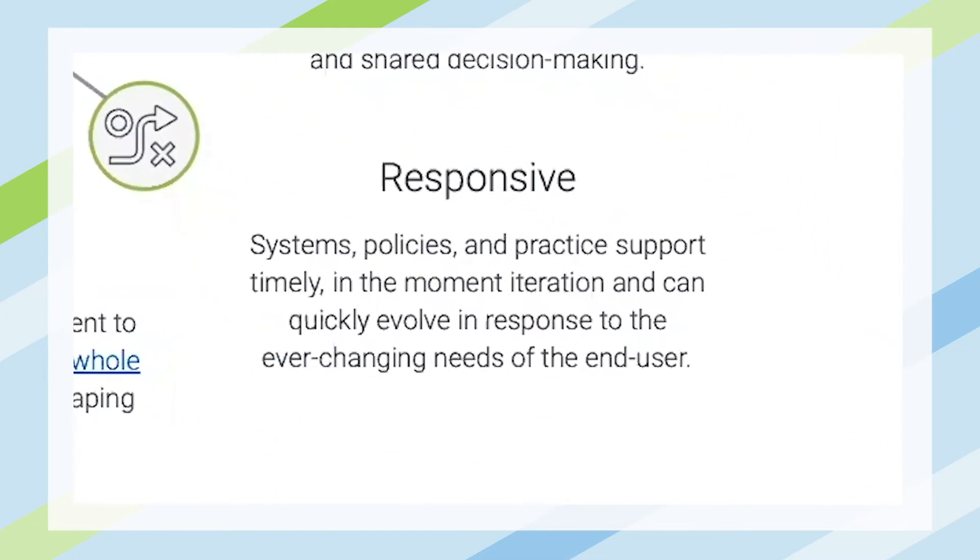Responsiveness is another really critical piece of what a strong data culture looks like. It means that we can quickly respond when things change. We felt that really intimately in 2020 — we've got systems and policies and practices so that when we have to pivot quickly, our system can pivot with us. We can ask different questions and collect different data without having to jump through a lot of hoops or completely shift funding streams.